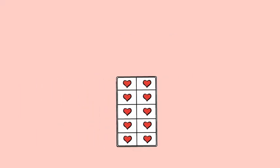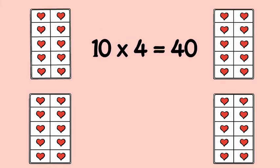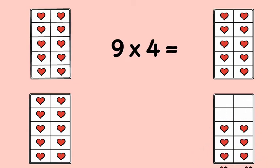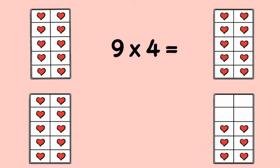Let's try 9 × 4. 10 × 4 is 40. Take away one group of 4. Take a look. 9 × 4 is 36.